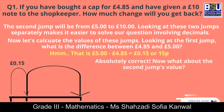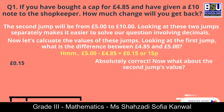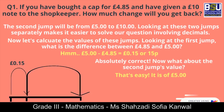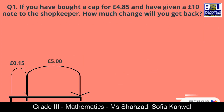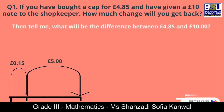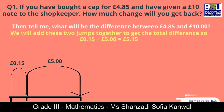Absolutely correct. Now what about the second jump? That's easy — it is 5 pounds. Very smart, that's right. Then tell me, what will be the difference between 4.85 pounds and 10 pounds? We will add these two jumps together to get the total difference, which is 5.15 pounds.